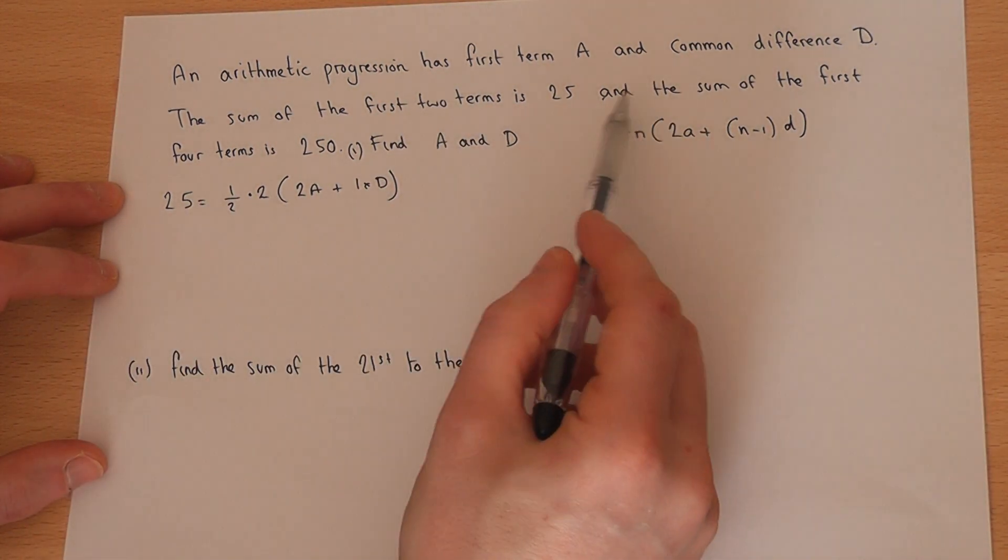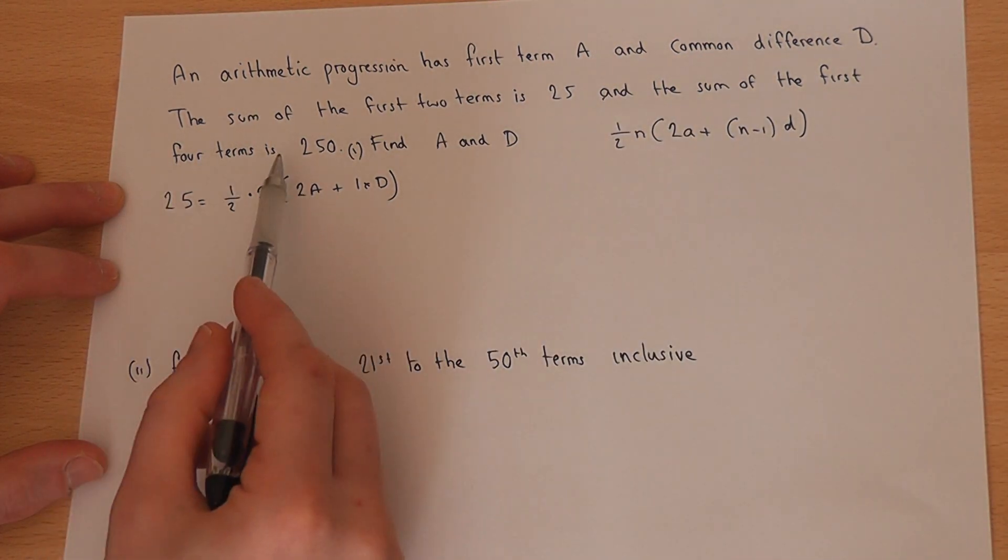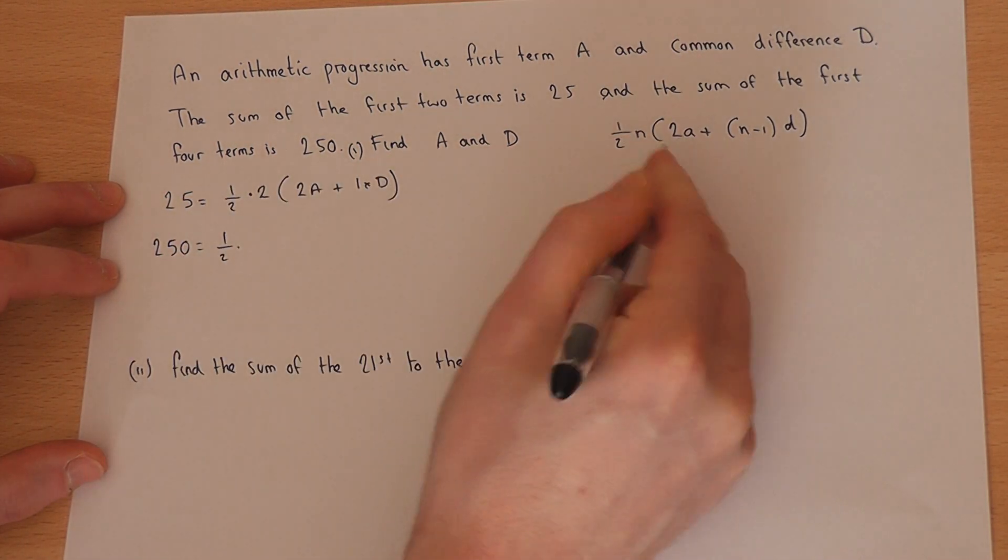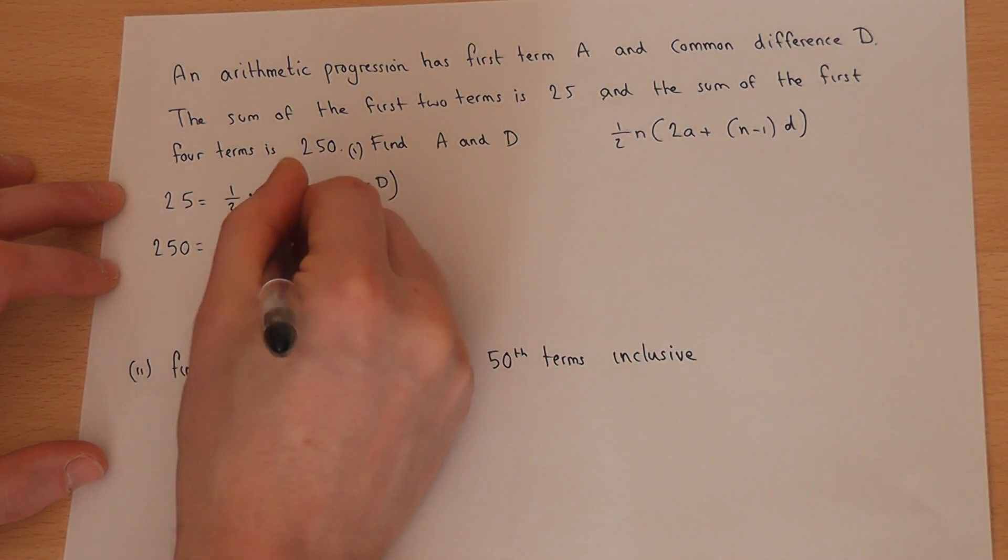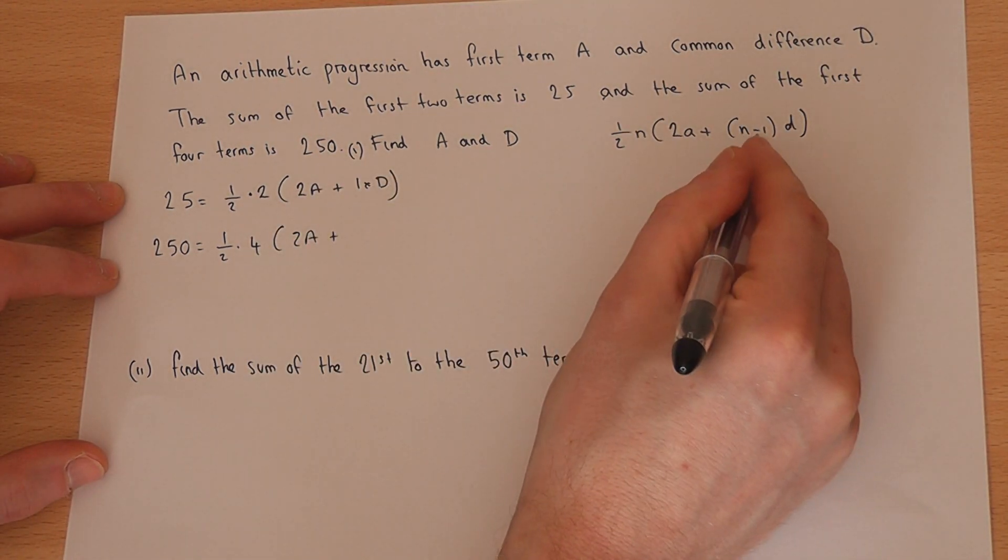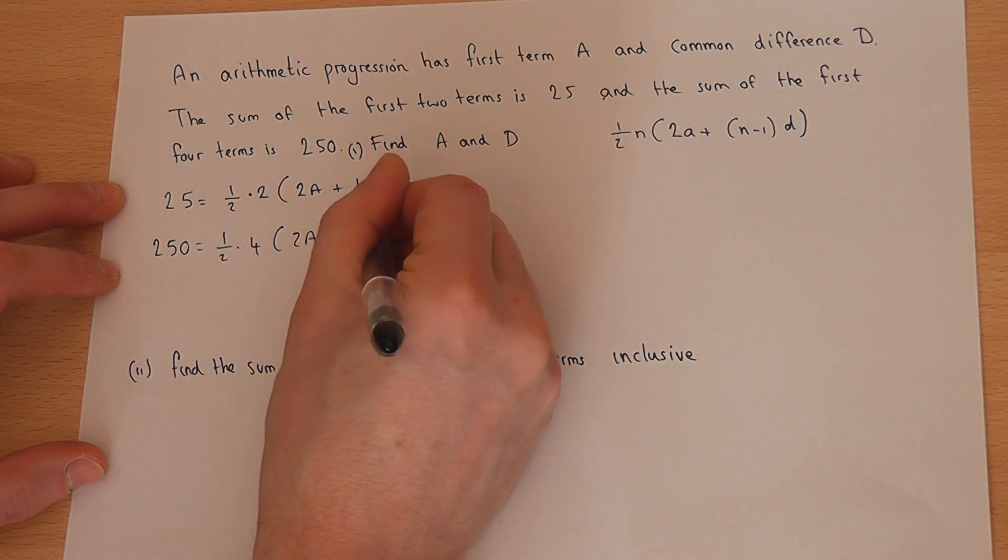And if I look at the second statement of the sum of the first four terms, it's 250, then 250 equals a half, n is now 4, still 2a, n is 4, so 4 take 1 is 3, plus 3 times d.